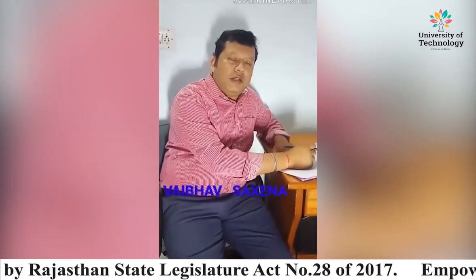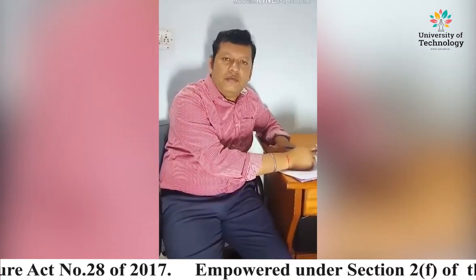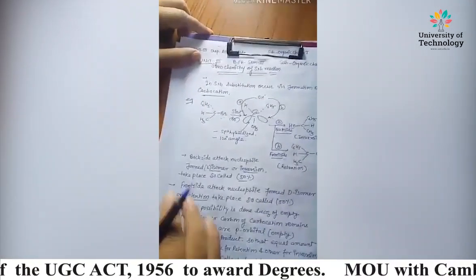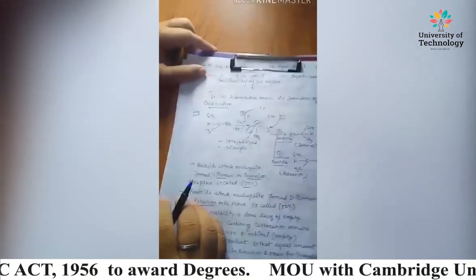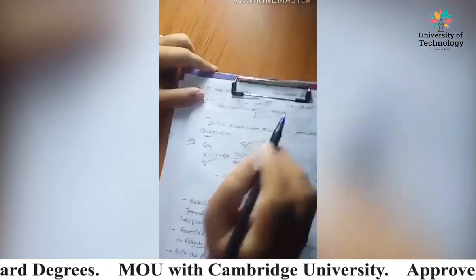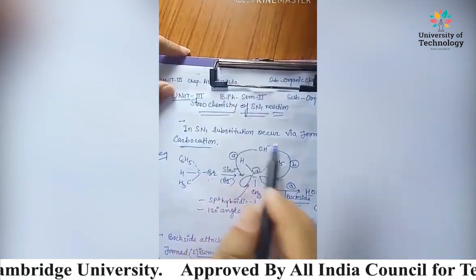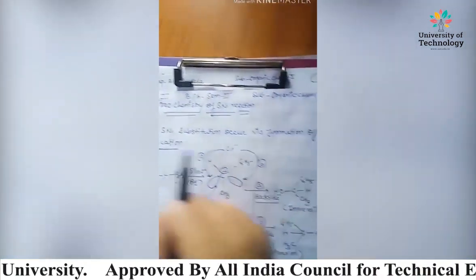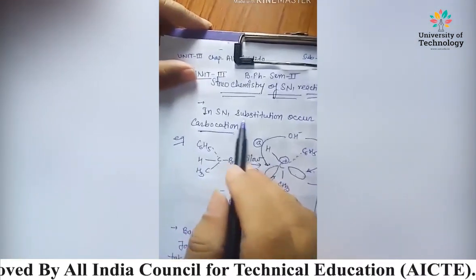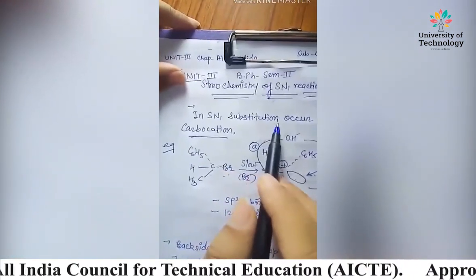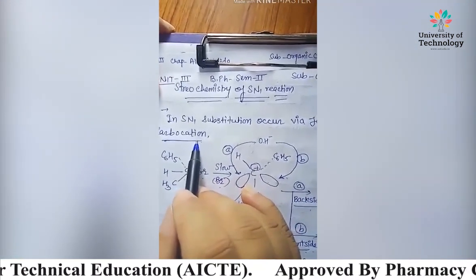Now we will see the next lecture. In the stereochemistry of the SN1 reaction, we understand the formation of the carbocation. SN1 substitution reaction begins with the formation of a carbocation.